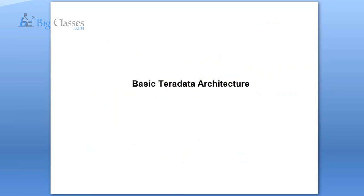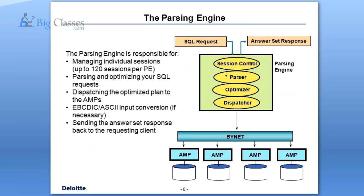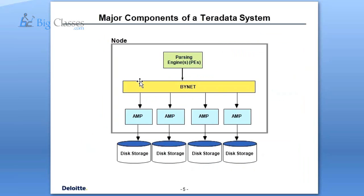For example, if you have 8 rows and 4 AMPs, there is no hard and fast rule saying rows 1 and 2 go to the first AMP, rows 3 and 4 go to the second AMP. It can be in any order, but the 8 rows should be divided into 4 AMPs so that the distribution is even. That only happens in the case of a unique primary index.